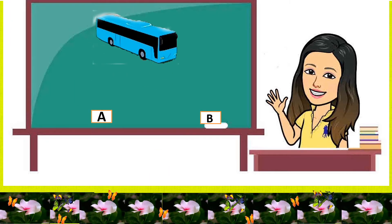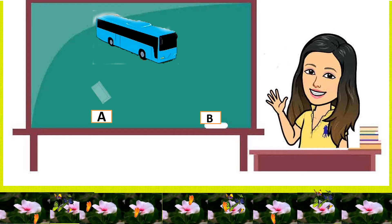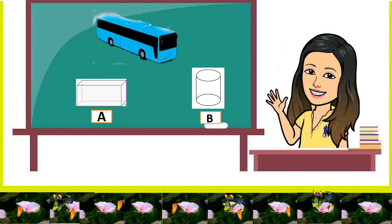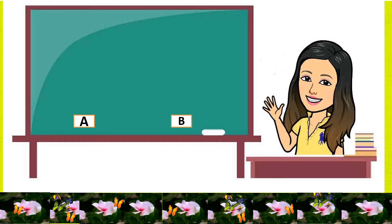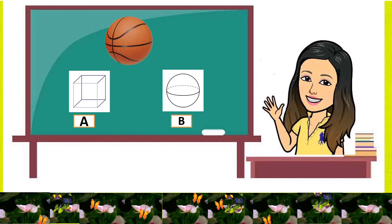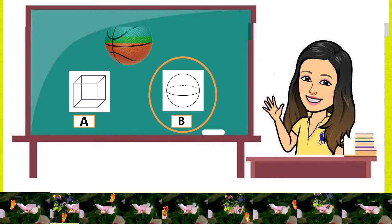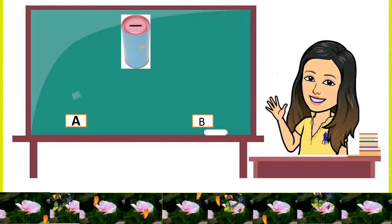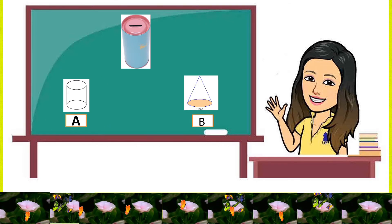Next, we have a toy bus. What is the 3D shape of it? A. Prism or B. Cylinder? Excellent! It is letter A. Number 3: ball. Is this similar to A. Cube or B. Sphere? Great! The answer is letter B. Next, what is the 3D shape of a coin bag? Is it A. Cylinder or B. Cone? Fantastic! It is a cylinder.